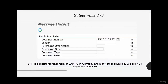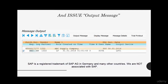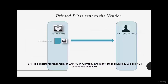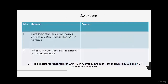So that's how you print the PO: select your purchase order number — one or more — hit the Execute button, and if there are multiple in the list, select whichever you want to print and click Output Message. We've now printed the PO and can dispatch it to the vendor via mail, FedEx, or some similar method.